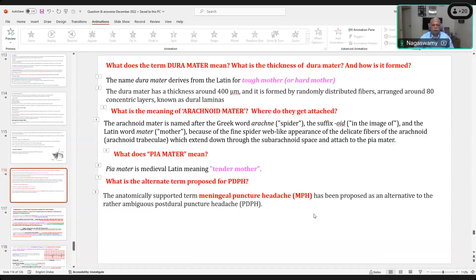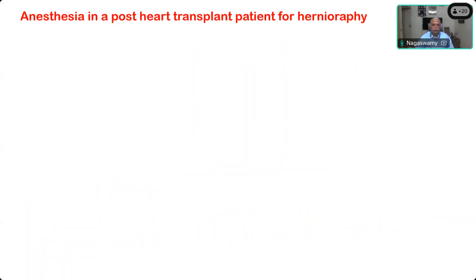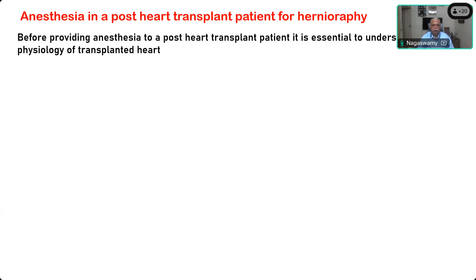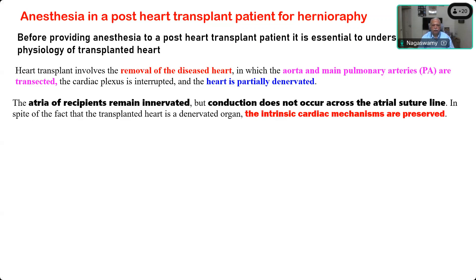For anesthesia in a post-heart transplant, you must understand the physiological changes of a transplanted heart. It involves removal of the diseased heart — unlike renal transplant where you leave the diseased kidneys inside and place the new kidney in the iliac fossa. The aorta and main pulmonary artery may be reconstructed, and the heart is partially denervated.